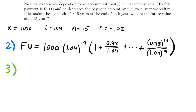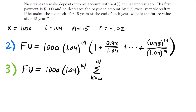For step three, the future value equals 1,000 times 1.04 to the 14th power, times the sum from k equals 0 to 14 of (0.98/1.04) to the power of k. The first term has this quantity to the 0 power (equal to 1), the next term to the first power, all the way to the 14th power for our last term. This geometric series represents the remaining factor.